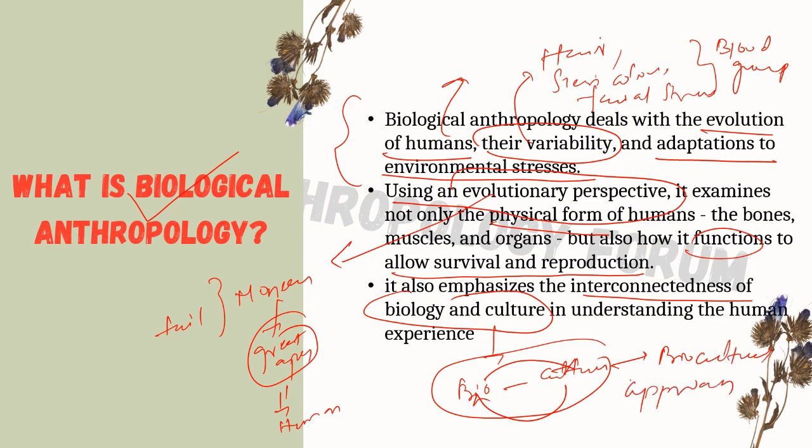Biological anthropology also emphasizes the interconnectedness of biology and culture — that is, how culture influences biology or biology influences culture. This is called the biocultural approach. This definition summarizes the whole picture of biological anthropology and can be used when writing an answer on this topic.